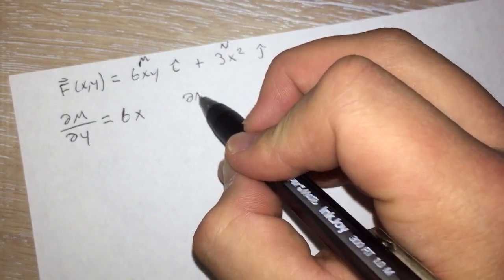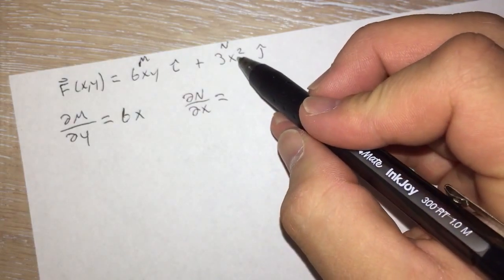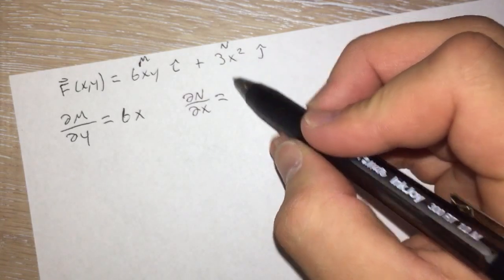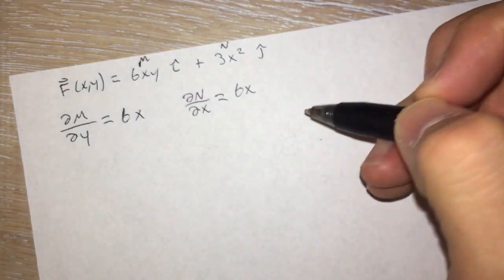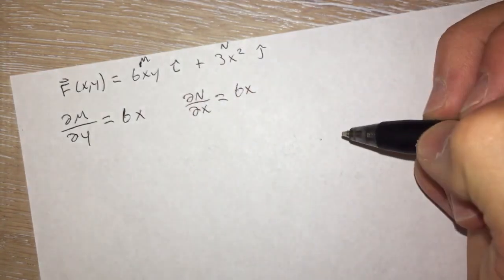Then we will take the partial derivative of n with respect to x. And for this one the 2 will carry to the 3 and you will also end up with 6x. So this shows that these are indeed conservative because they are equal.